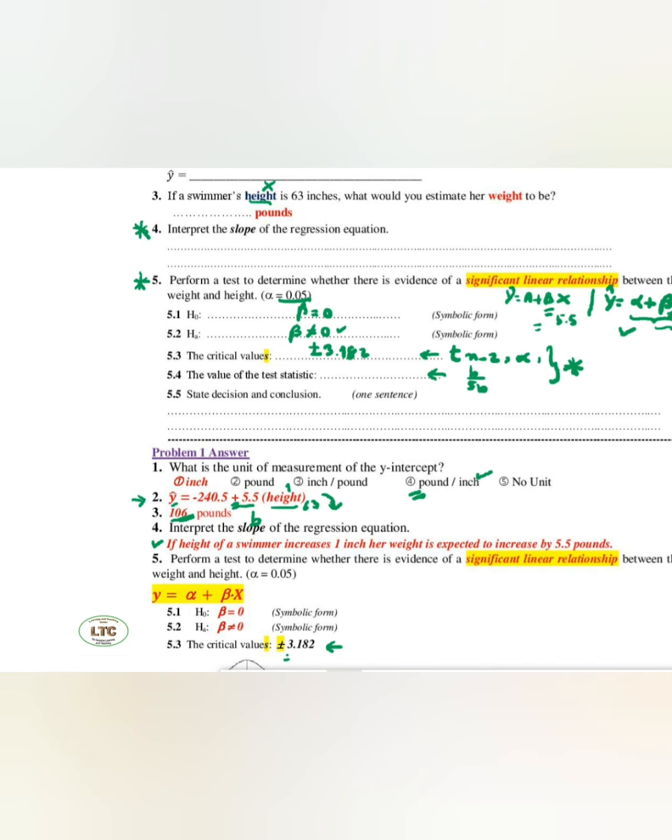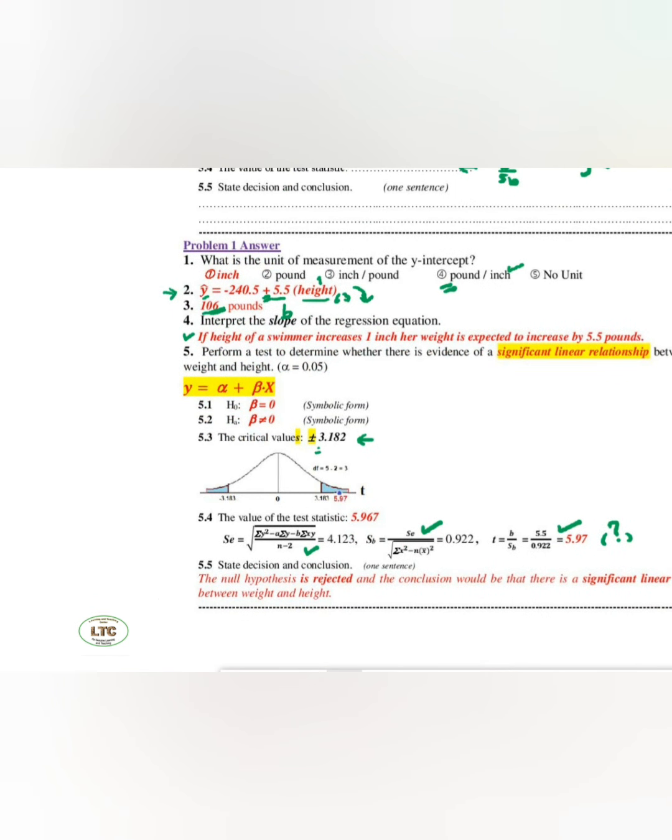When you compute the test statistic as b over SP, you get 5.97 here. So your rejection region is beyond the positive critical value and negative critical value - to the right of positive, to the left of negative. These are rejection regions, too far away from zero. Your test statistic is in the rejection region, therefore reject H0. You write formally: the null hypothesis is rejected and the conclusion would be - you reject H0, meaning H0 is false and HA is true. The conclusion must be about HA, not H0.